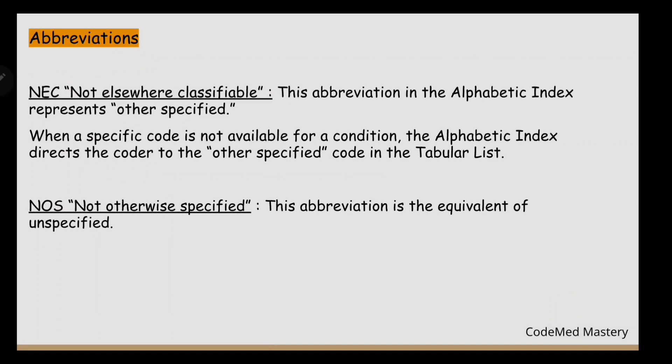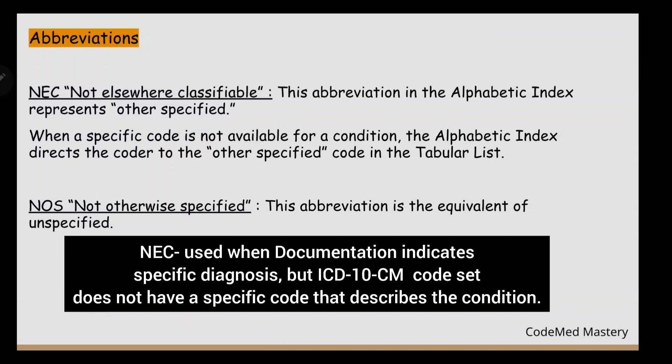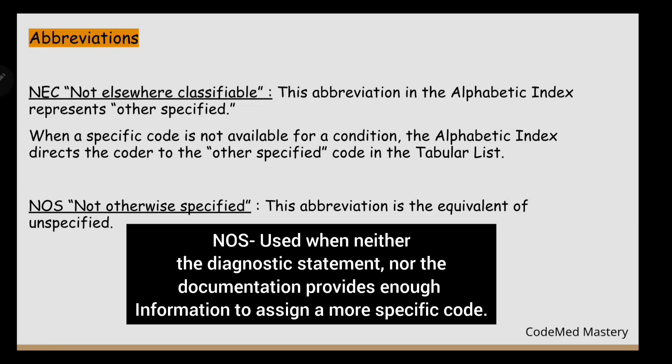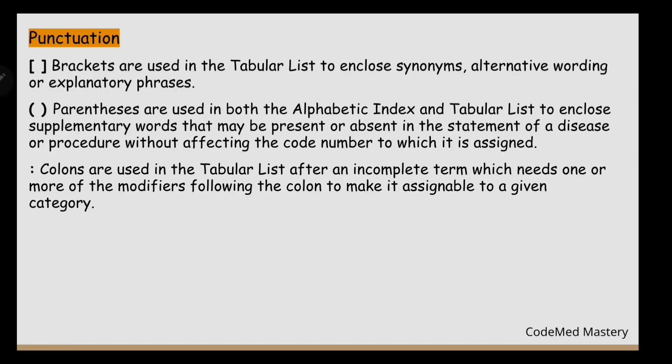Next are abbreviations. NEC stands for Not Elsewhere Classifiable. In the Alphabetic Index, NEC represents 'other specified' — when a specific code is not available for a condition, the index directs the coder to an 'other specified' code in the Tabular List. NOS stands for Not Otherwise Specified, which is equivalent to 'unspecified.' NEC codes are assigned when documentation indicates a specific diagnosis but ICD-10-CM lacks a specific code. NOS codes are used when neither the diagnostic statement nor documentation provides enough information to assign a more specific code.